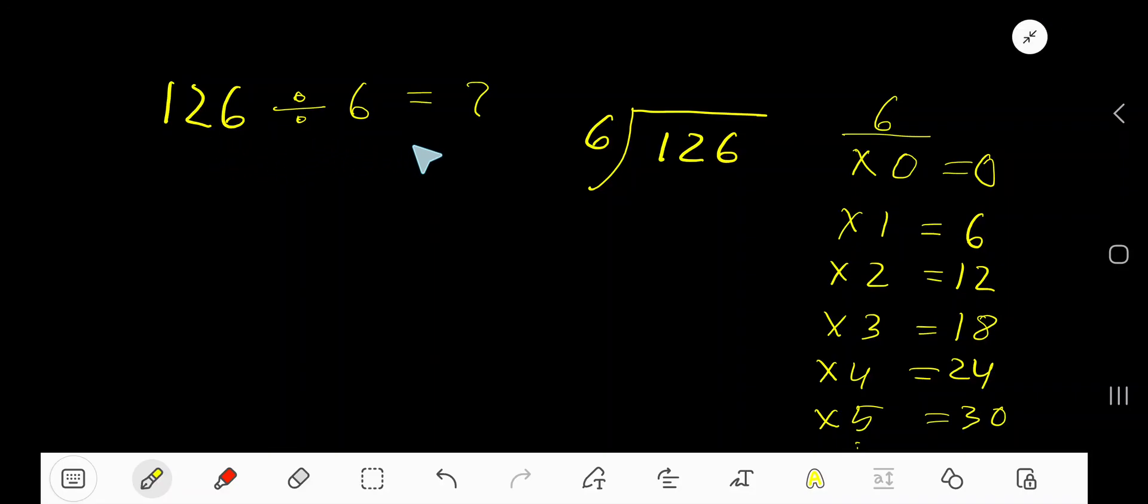126 divided by 6. Here 6 is the divisor. 6 times 0 is 0, 6 times 1 is 6, 6 times 2 is 12, 6 times 3 is 18, 6 times 4 is 24. To find out the multiplication table of 6, just start...